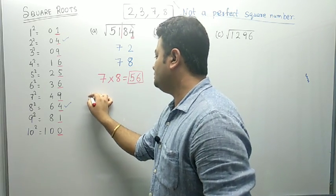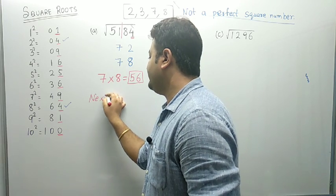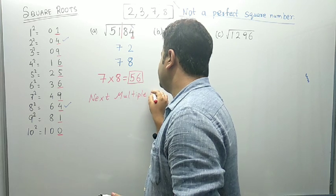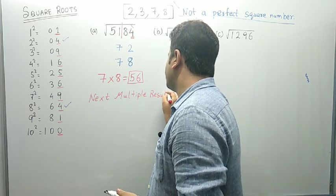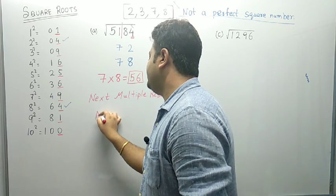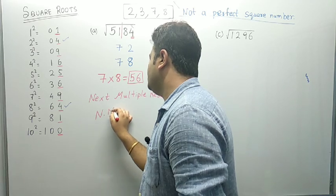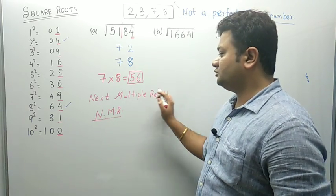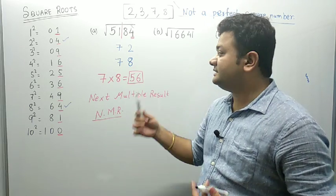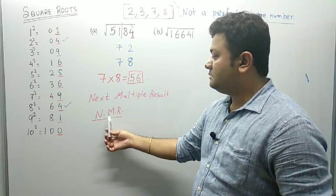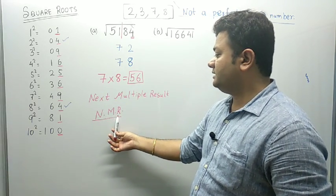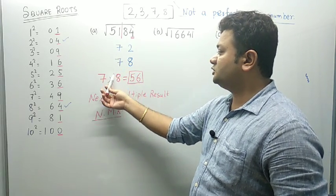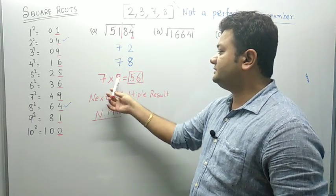In short, we name it NMR — Next Multiple Result. N means next, M means multiplication, and R means result. So we have to multiply the number which is common in both cases with its next number. Remember, we are not taking 8 from the answer options — if you had got 4, you would do 4 into 5; if you had got 11, you would do 11 into 12.